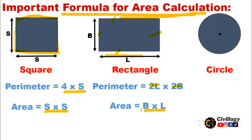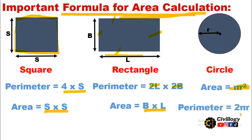For a circle, sometimes a pillar is provided in circular shape for aesthetic purposes. This is the radius of the circle and its area is equal to π r². Its perimeter, or circumference, is equal to 2πr. These are the basic formulas to learn before the area calculation of pillars, columns, and slabs.